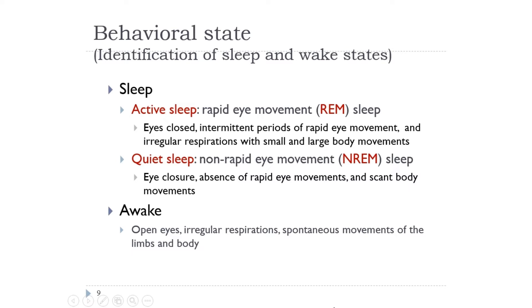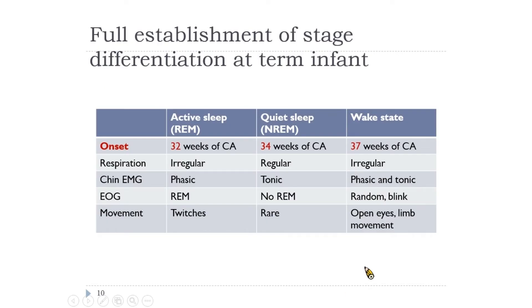We can identify the awake state by eye opening and spontaneous movement of the limbs and body. Active sleep, the REM stage, is identified by closed eyes, intermittent periods of rapid eye movement, irregular breathing, and small or large body movements. We may need extra-cerebral electrodes to determine the state, such as EKG, EOG, chin, and respiration leads. This table illustrates the changes of different states at each channel.